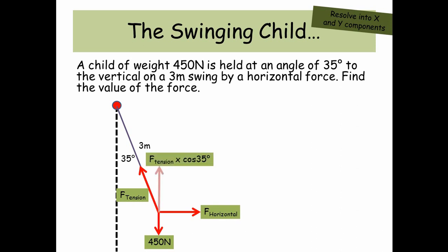Now what we're going to do is we're going to resolve the force of tension into its components on the y and x axis. So we know the force of tension times cos 35 is equal to 450. And we know the force from the tension in the rope times sine of 35 is equal to the horizontal force.